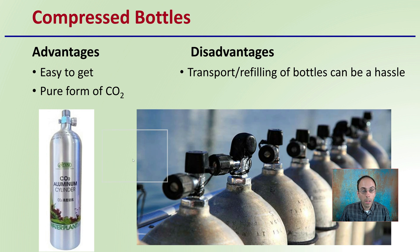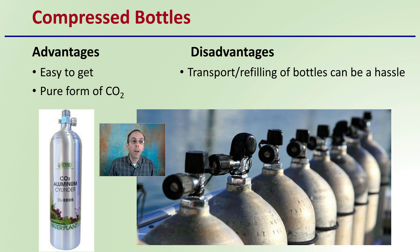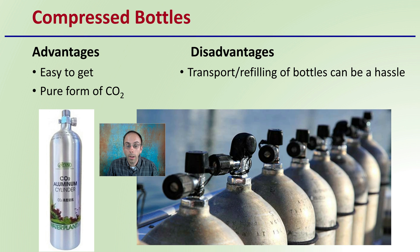One of the options when we're looking at enrichment is compressed bottles. The advantage of utilizing compressed bottles is they're typically easy to get — easy to find at most grow shops as well as many air suppliers. They're also a pure form of carbon dioxide, meaning just carbon dioxide is purified and compressed in the bottle; you're not getting any sort of byproducts. The disadvantage, though, is that transport and refilling of the bottles can be a hassle, especially as you get to the larger sizes.